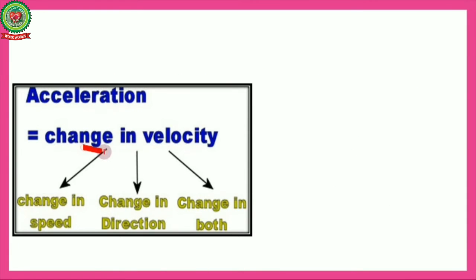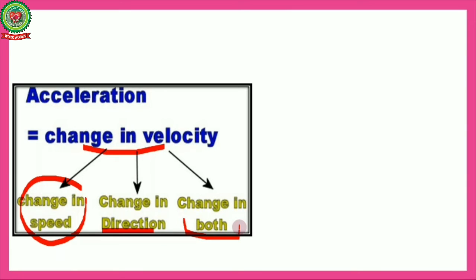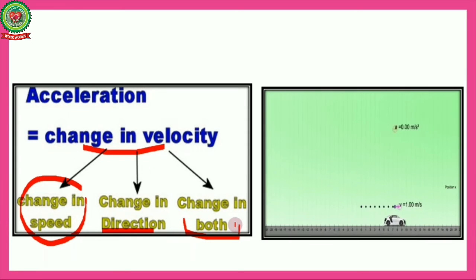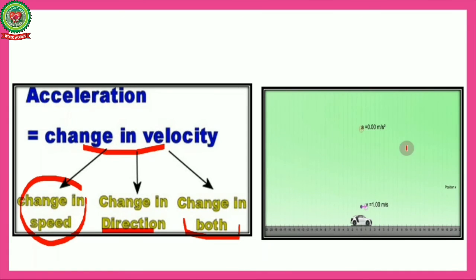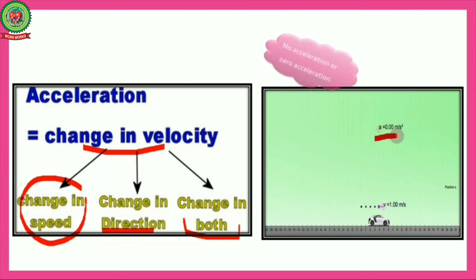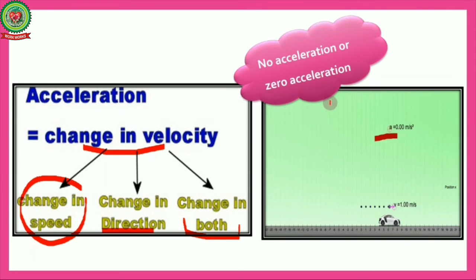We conclude that acceleration is change in velocity. This change can be due to change in speed, change in direction, or both. Any kind of change in velocity means it is accelerated motion. On the other hand, if the velocity is constant — for example, 1 m/s — and there is no change in velocity, then acceleration is zero.